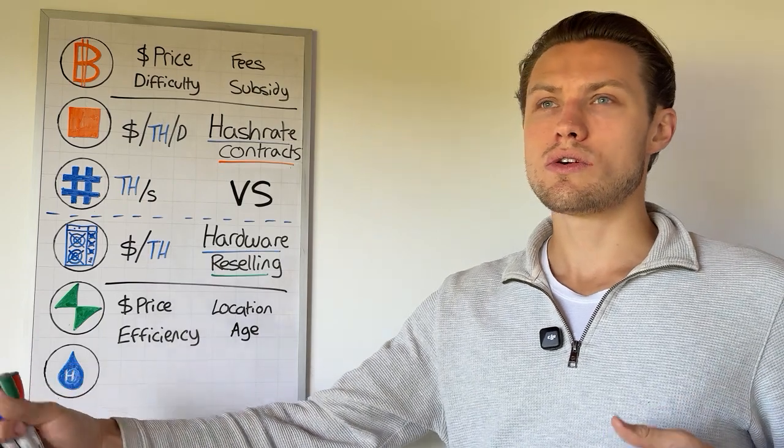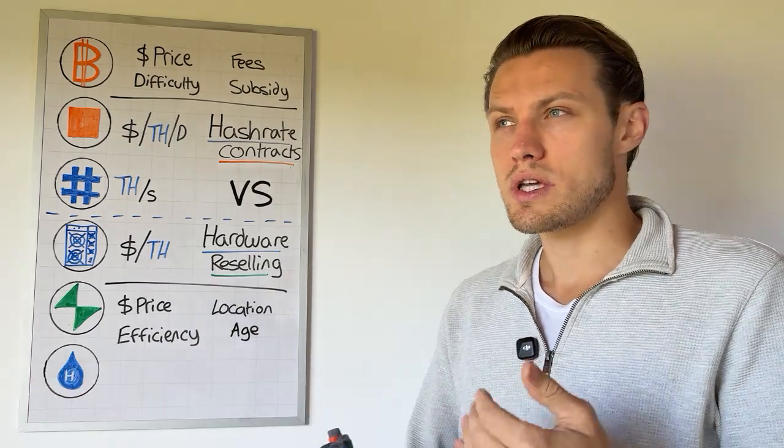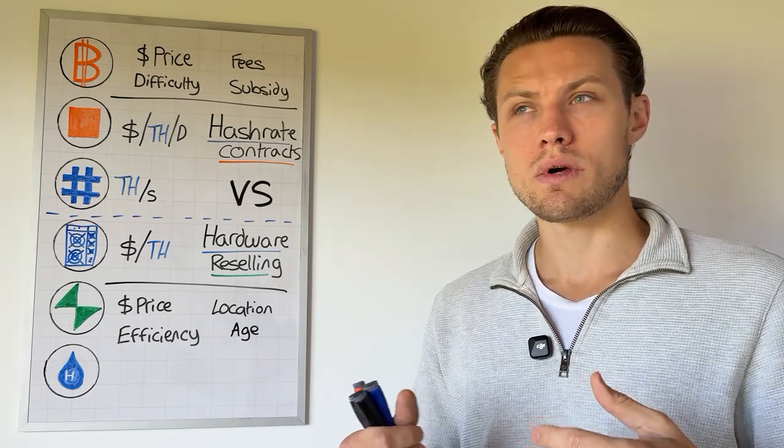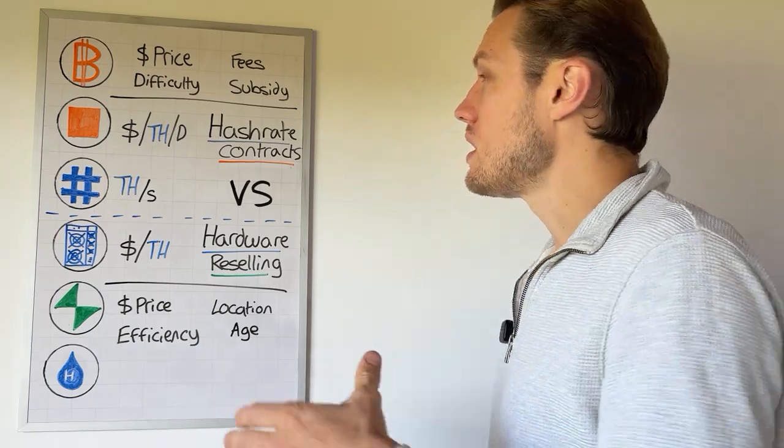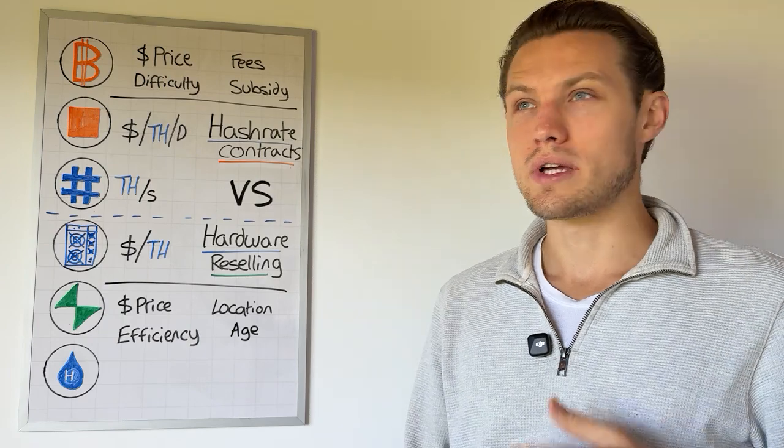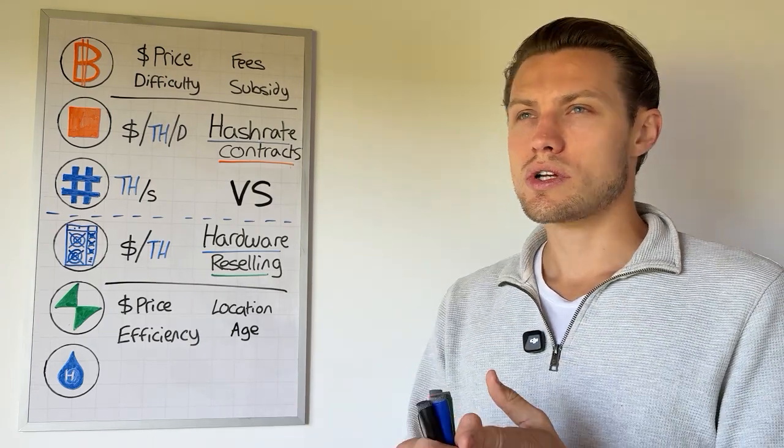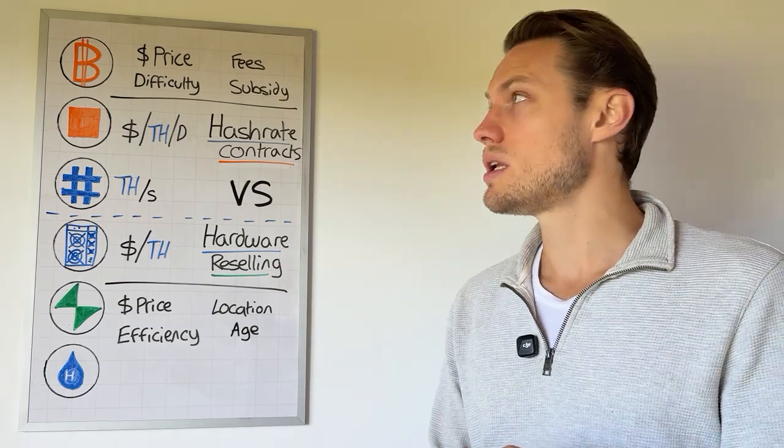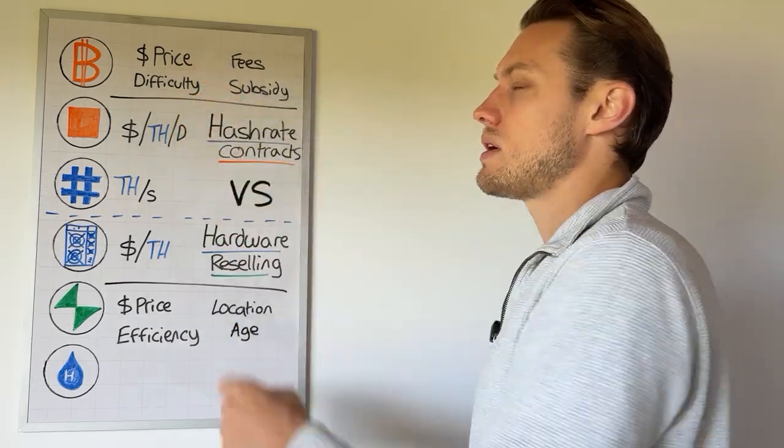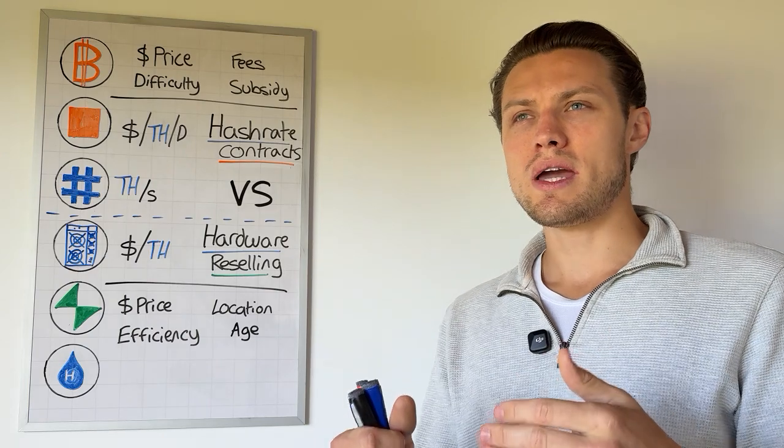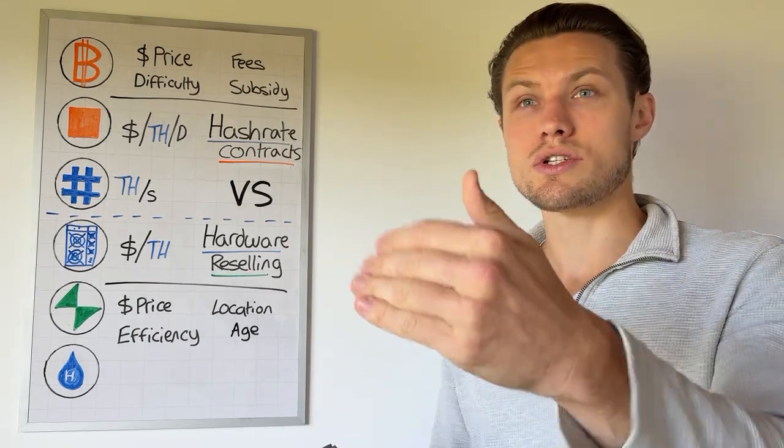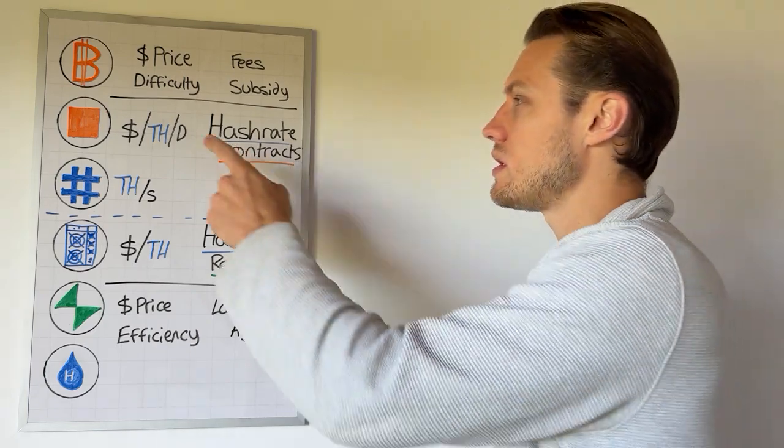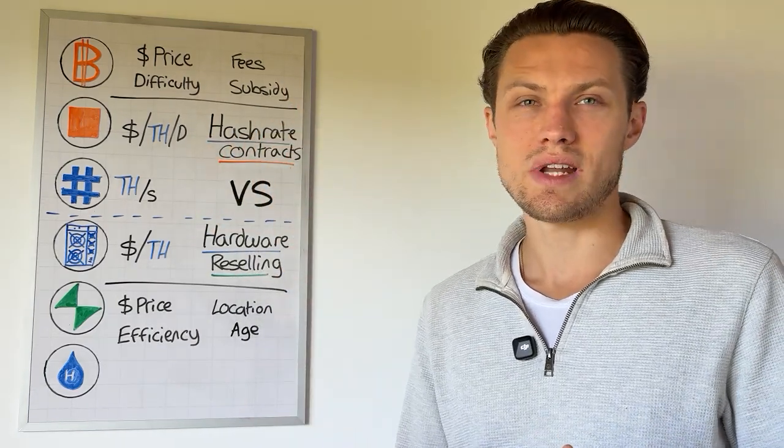Difficulty. The longer the contract is, you're contending with the difficulty. We can't predict the future, but we can assume that more miners are joining the network as the network is growing. Subsidy. We all know every four years it's getting cut in half. So you're contending with this diminishing returns in terms of the quantity of Bitcoin you mine, but also the main driver, the price. If you buy a hash rate contract at a low price and the price jumps up, yes, you're making a dollar return. But if you use Bitcoin to pay for the hash rate contract, it's kind of negligent.